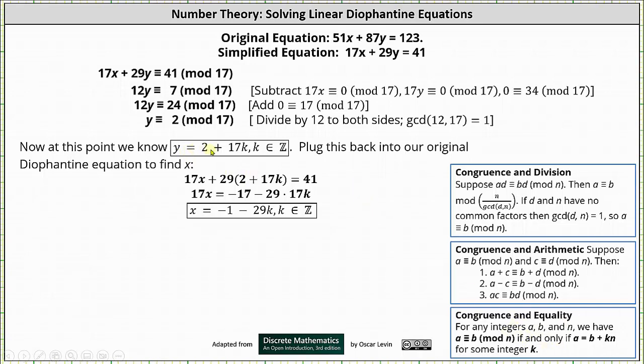To find x, we substitute 2 + 17k for y into either the original or simplified equation. I'm going to use the simplified equation, which gives us 17x + 29(2 + 17k) = 41. Simplifying and solving for x, we have x = -1 - 29k, where k is an integer.